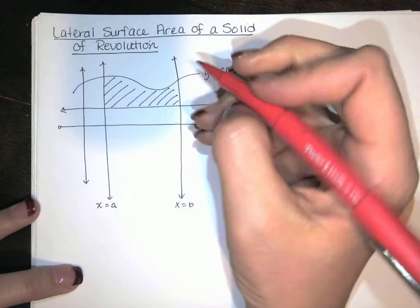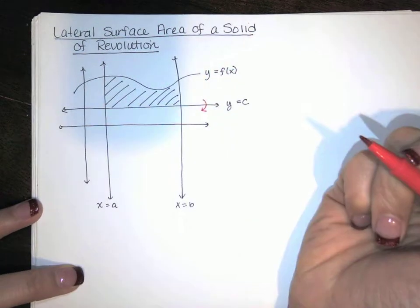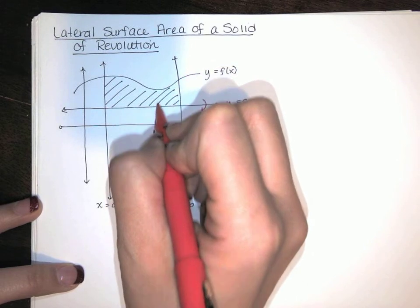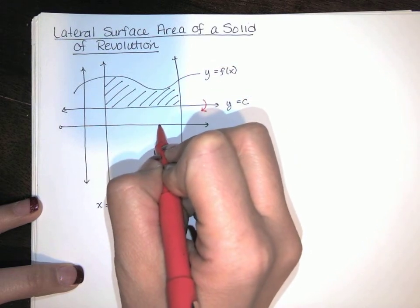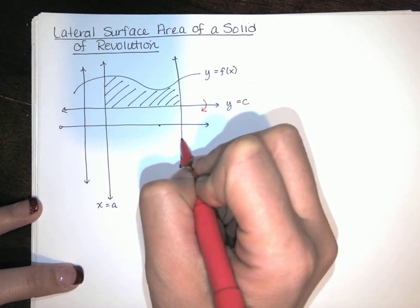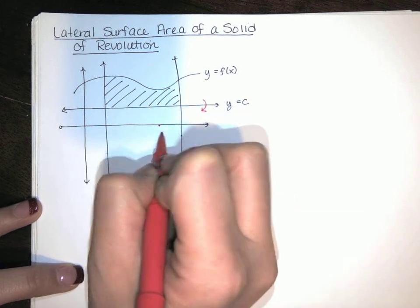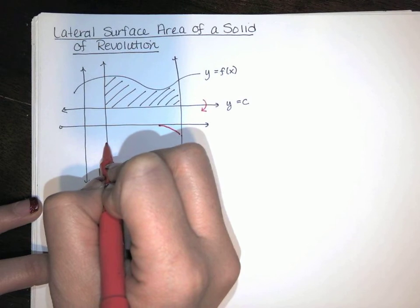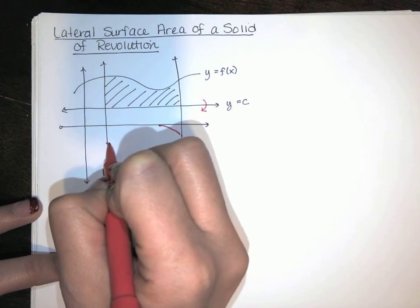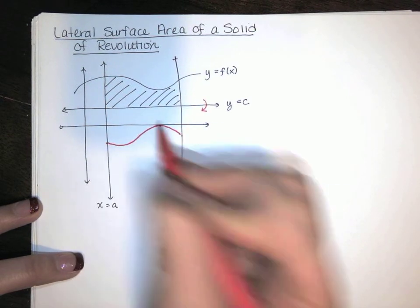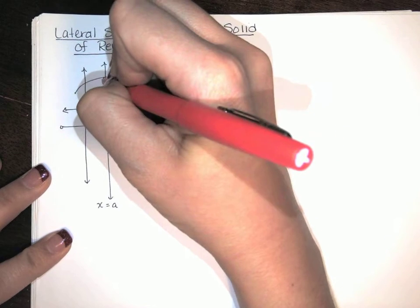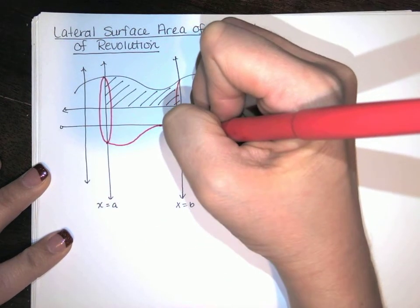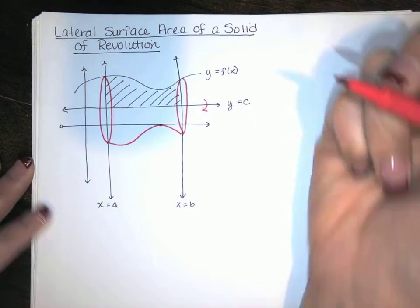If I take that region and revolve it about the line y = c, it's going to create a vase-like solid of revolution. I'm drawing pretty much the same picture as when we found volumes of solids of revolution.